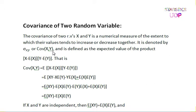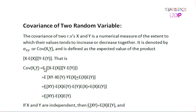X and Y are two random variables. We denote the covariance as sigma X, Y or covariance of X and Y, and it is defined as the expected value of the product: X minus the expectation of X, multiplied by Y minus the expectation of Y.